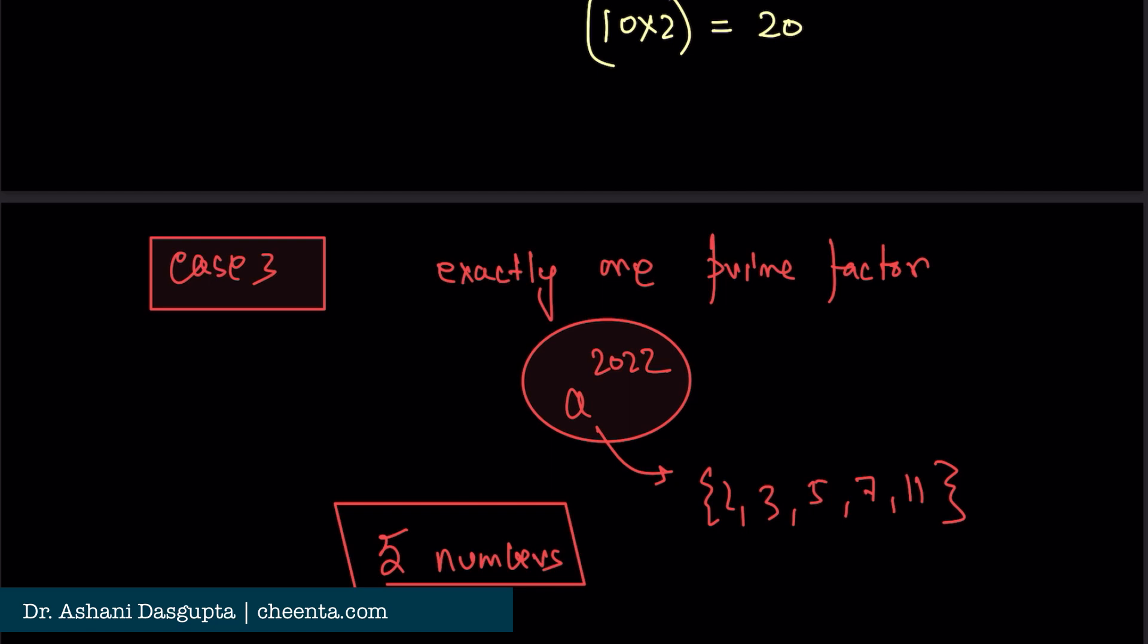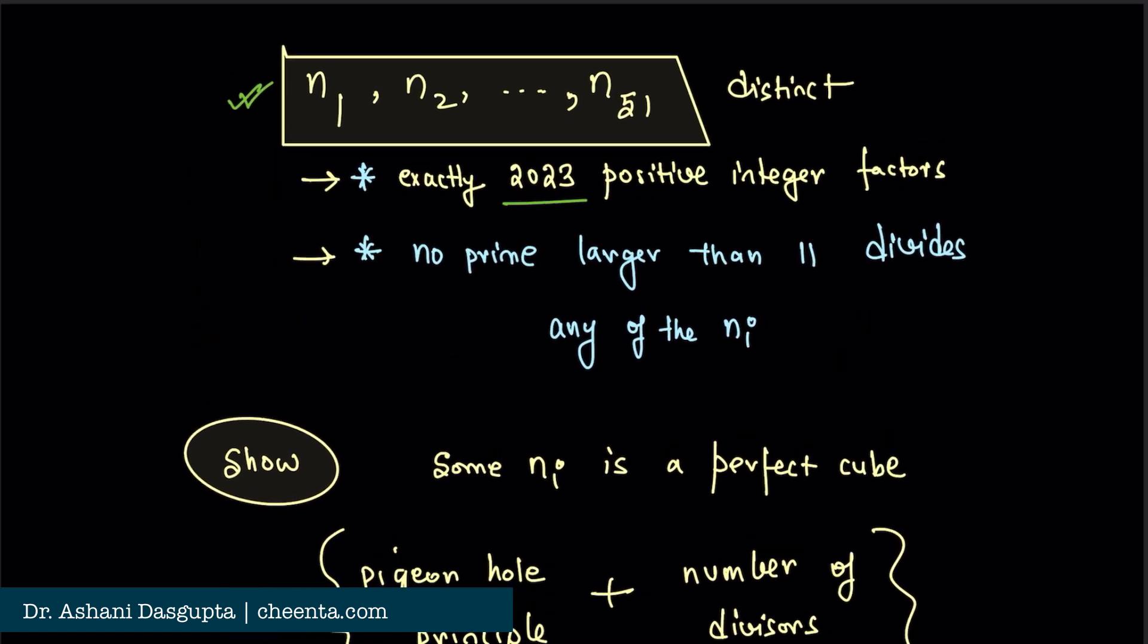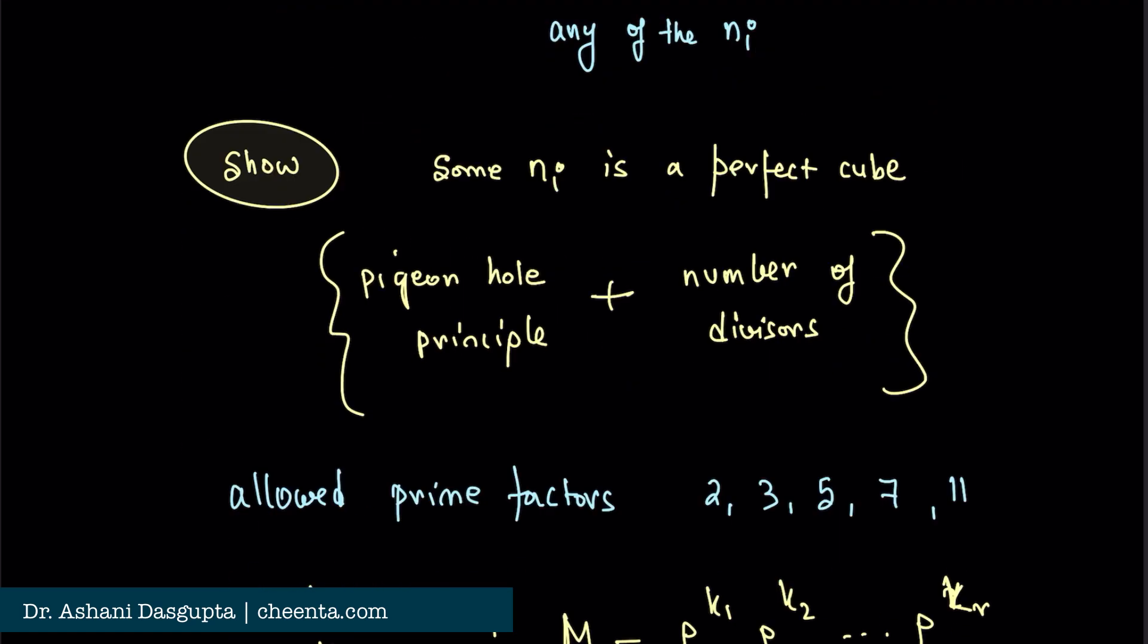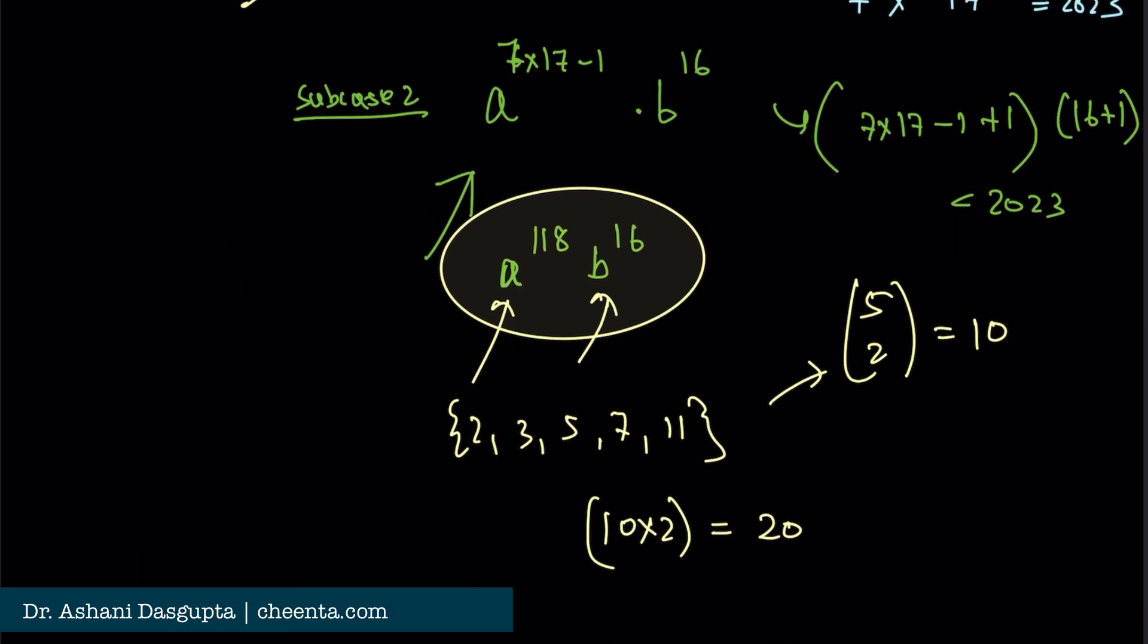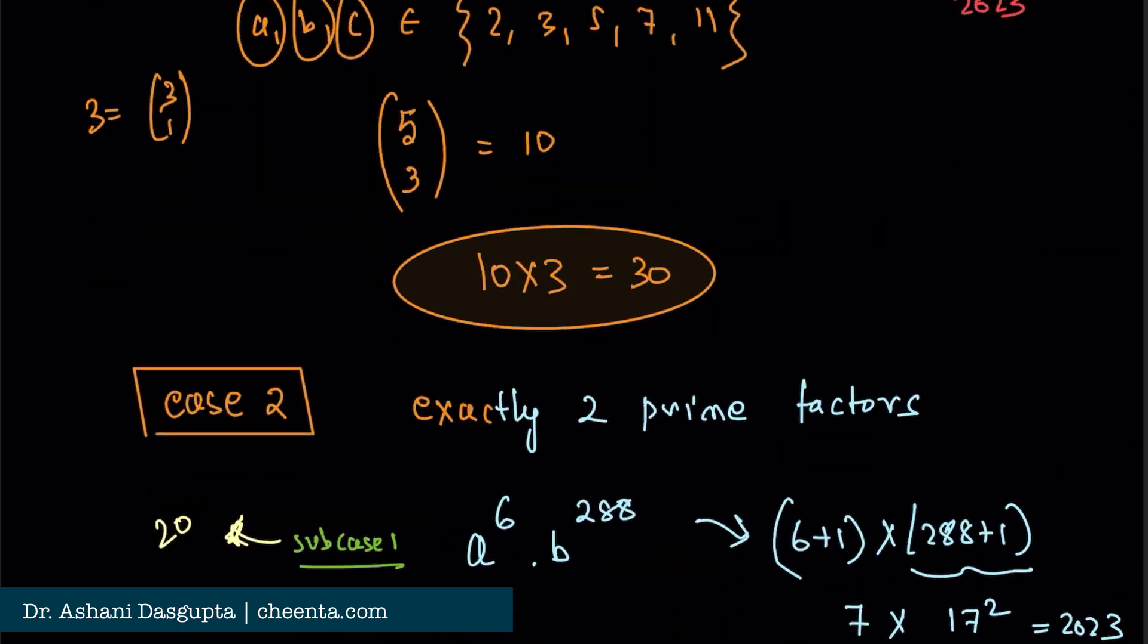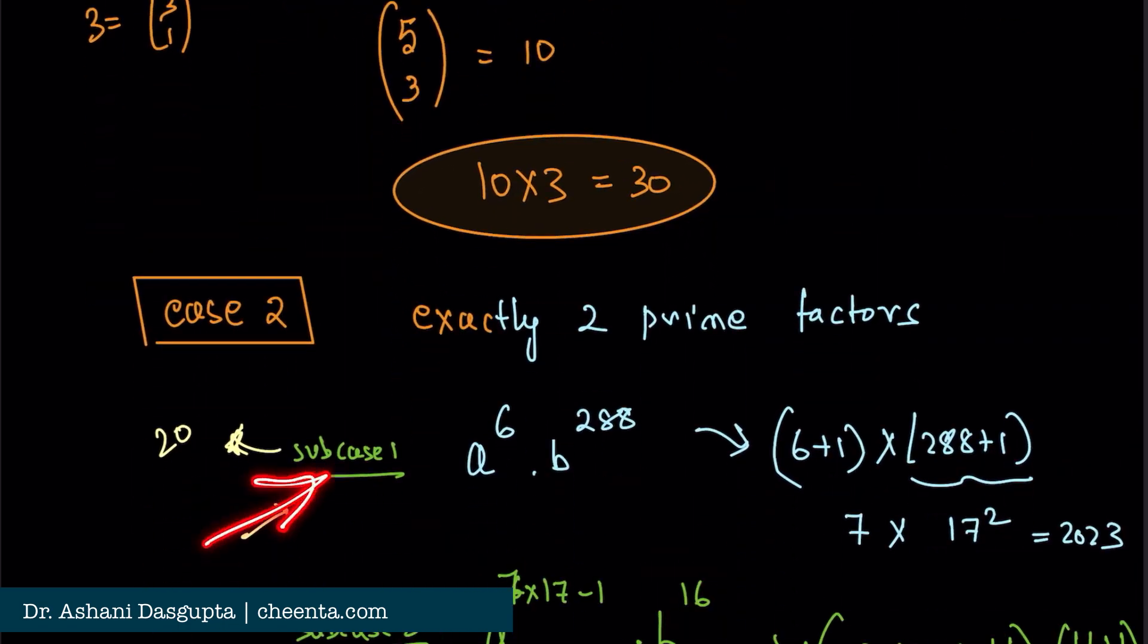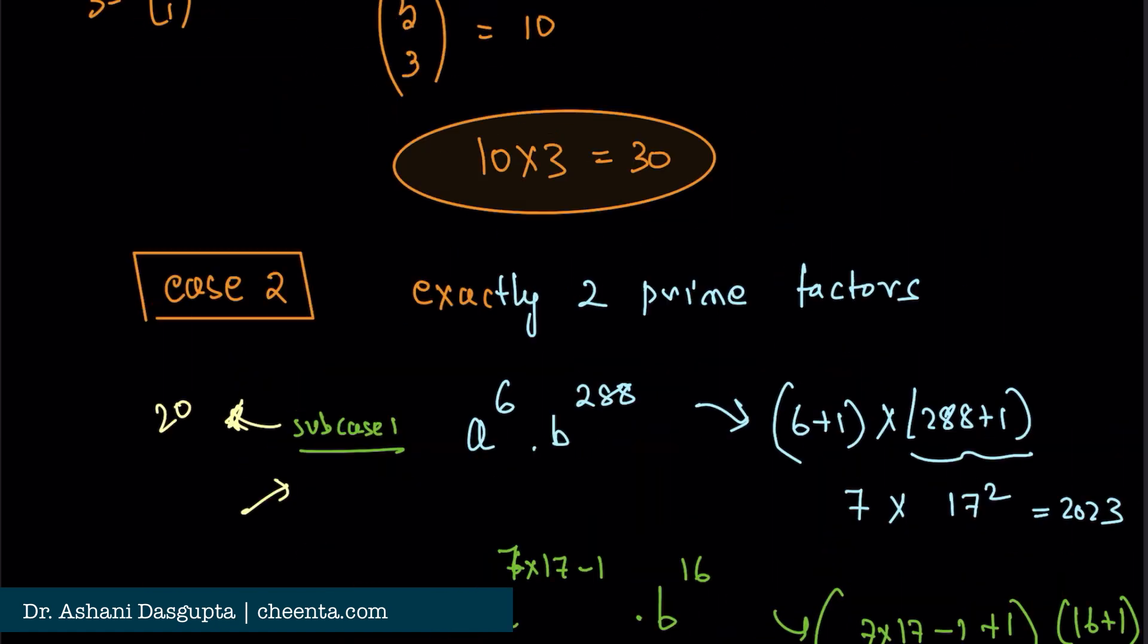But do we have to choose such a number? Well, of course, because there are 51 numbers chosen. From the first case we have 30 numbers, and from the second case subcase 2 we have 20 numbers. So total 50 numbers are accounted for. To choose the 51st number, I have to go either in subcase 1 or Case 3. So that means I have to include a perfect cube. And that's it. That's the final solution.